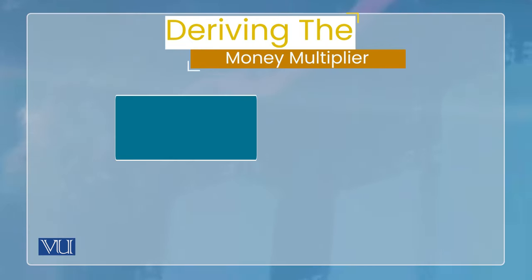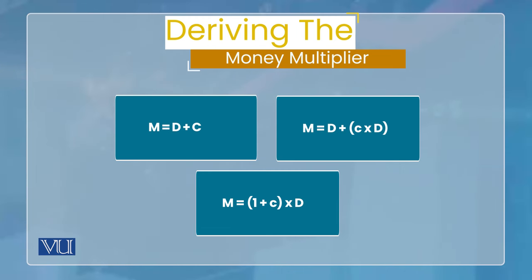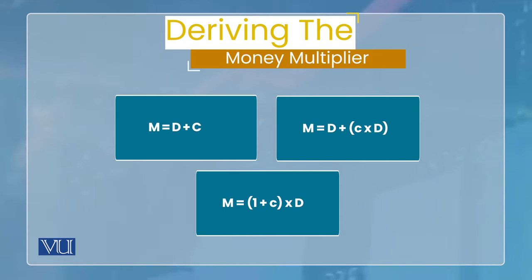تو deposit کا formula derive کر لیا۔ اگر ہم اس میں currency add کریں تو total money supply مل جائے گی۔ currency کو ہم کہہ سکتے ہیں کہ یہ currency-to-deposit ratio (c) multiplied by D ہوتا ہے۔ تو total money supply = (1 + c) × D۔